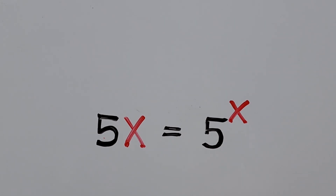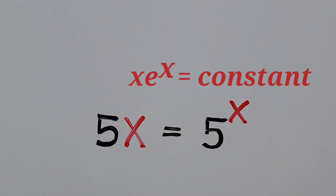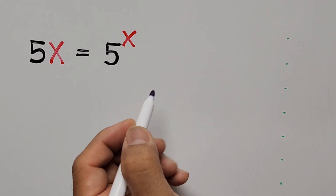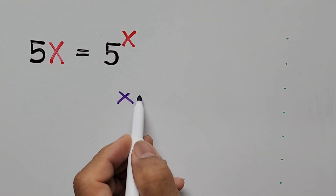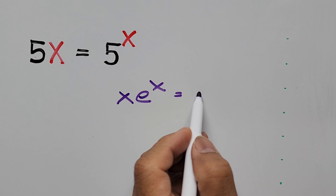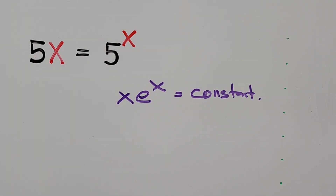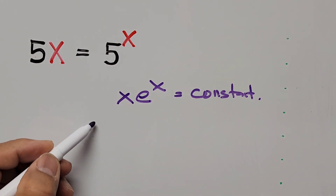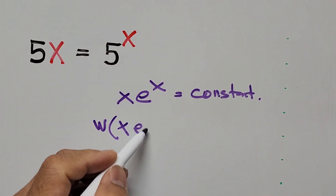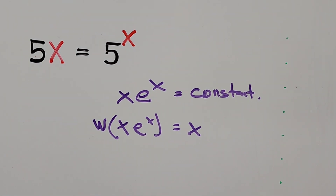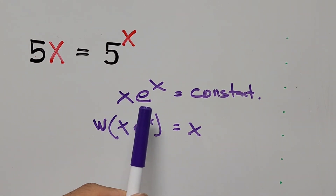We'll be transforming the equation into the form x times e to the power of x equals a constant. So we have x times e to the power of x equal to a constant. Before we can use the Lambert W function, we have to convert the equation into this form: x times e to the power of x equals the right-hand side constant.